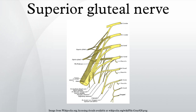This gait disturbance is known as Trendelenburg gait. In a positive Trendelenburg sign, the pelvis sags toward the normal unsupported side. The opposite, when the pelvis is elevated on the swing side, is known as Duchenne limp. Bilateral loss of the small gluteal muscles results in a waddling gait.